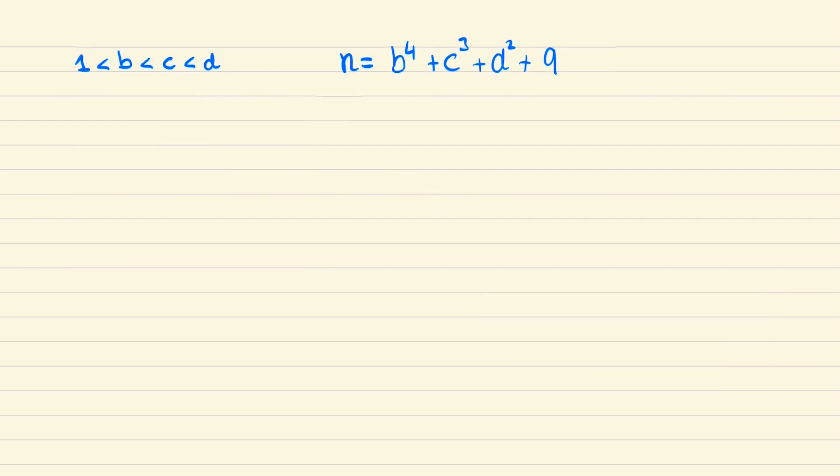To begin this problem, if we start by assuming that b is greater than 2, then c, d, and n will all be odd numbers. This says that the sum of four odd numbers is equal to an odd number, which of course is nonsense. So we must conclude that b is equal to 2.